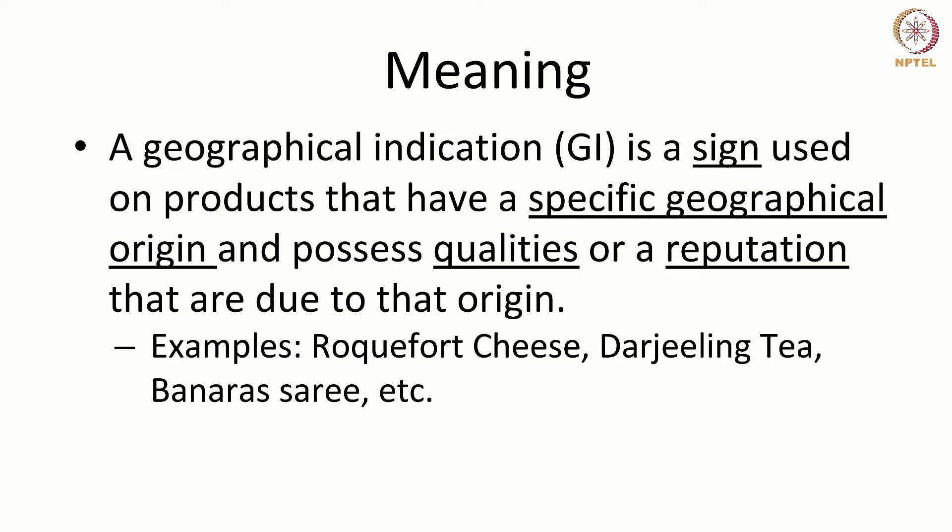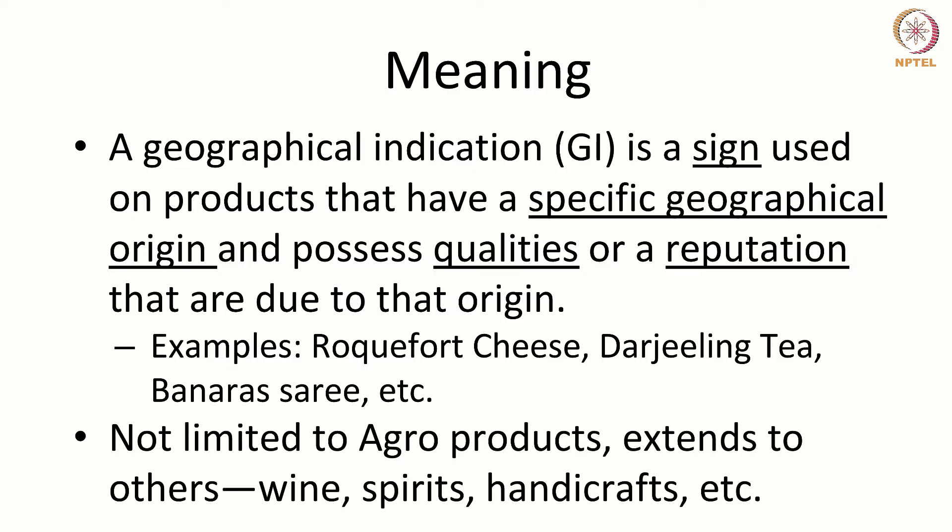For instance, Roquefort cheese, Darjeeling tea, and Banaras saree are different examples of a GI. A GI is not limited to agricultural products; it extends to other products like wine, spirits, and handicrafts.